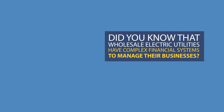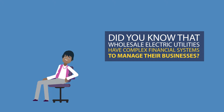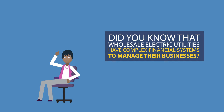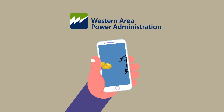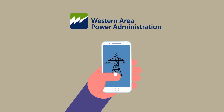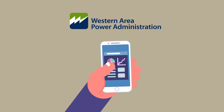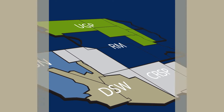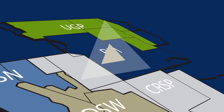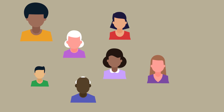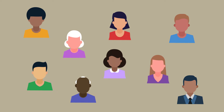Did you know that wholesale electric utilities have complex financial systems to manage their businesses? Although they may be complex, it's not impossible to understand. The Western Area Power Administration has 10 rate-setting systems over 9 power systems and multiple funding sources to keep the lights on 24-7. It covers 15 states comprised of 4 regions and has more than 680 utility customers that each have their own individual business needs.